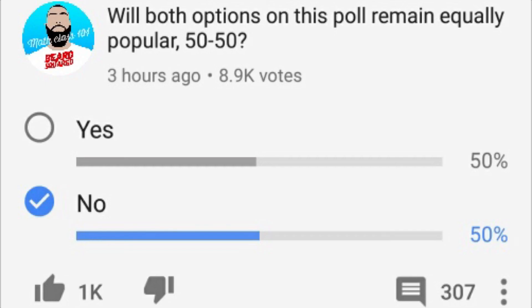Okay, so for question four, I want to find out the probability that the first and the second t-shirt have the same color and the same size. So I'm going to be using a different sample space here. Remember, I've got four colors: yellow, blue, gray, and red. And I have three different sizes: small, medium, and large.